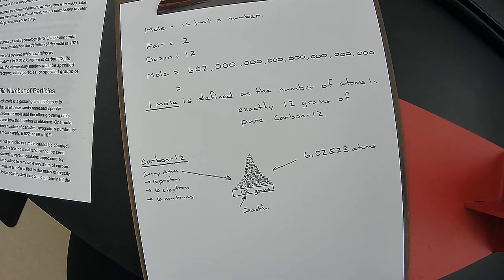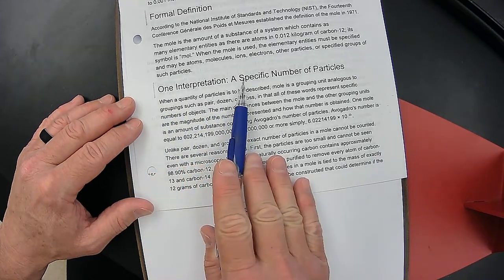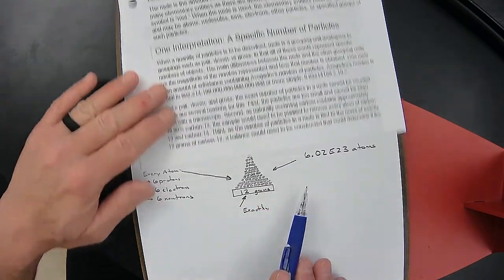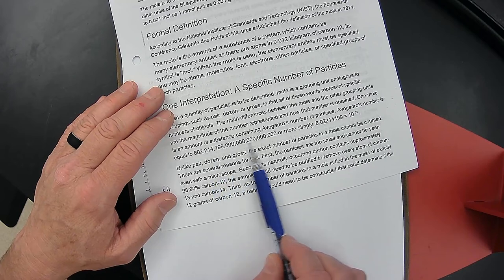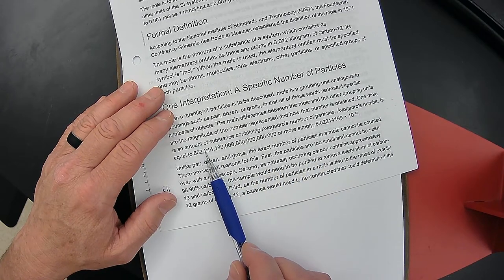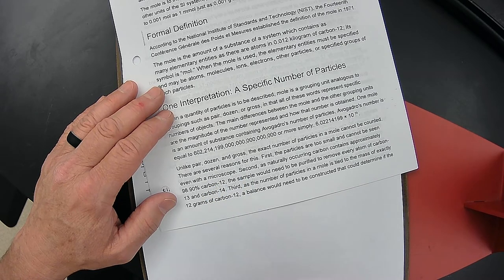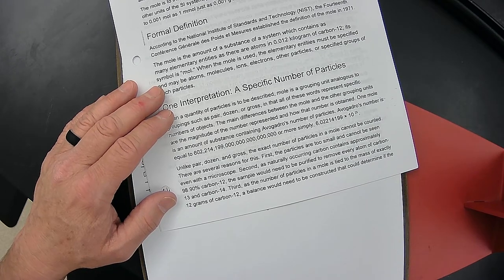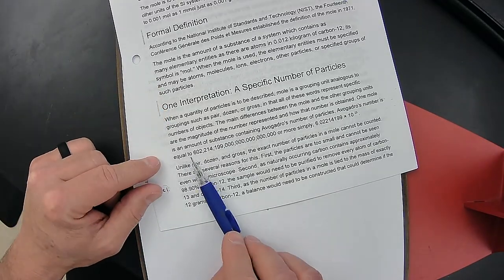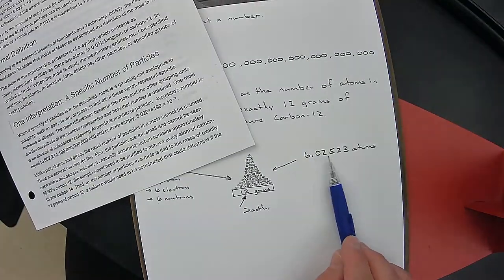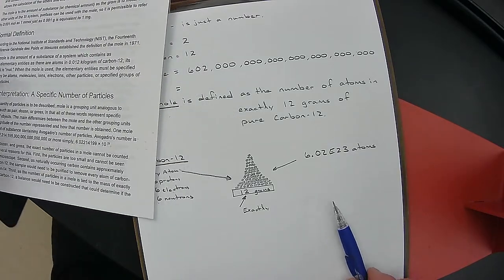If we looked at our article, you'll see that one interpretation is a specific number of particles. In this case, we're talking about atoms. They don't go 602 and then all zeros. They go 602, 214, 199. So technically it involves all of these digits, but we're going to round. Just like pi is 3.141592 and so on, we typically use 3.14 for pi. We're going to use 6.02 times 10 to the 23rd atoms.